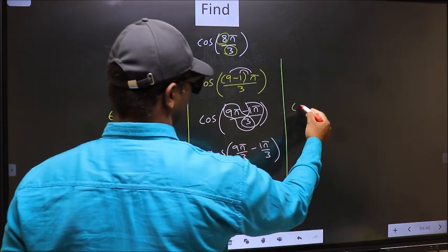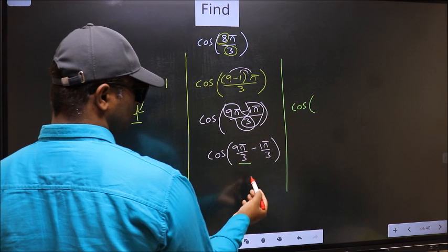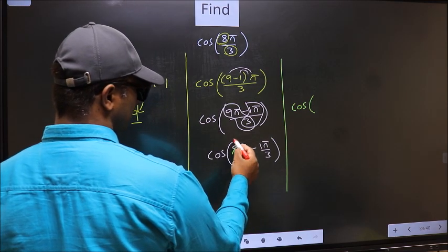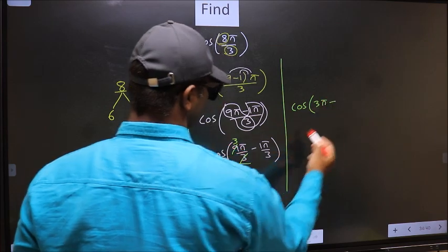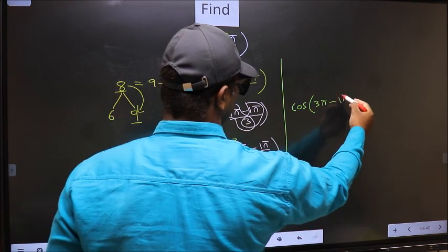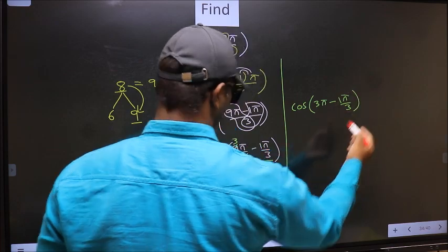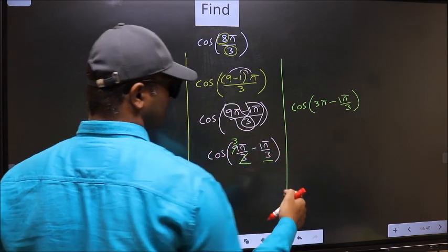Next, cos. Now here you should cancel: 3 ones, 3 threes. So you get 3π minus, this no change, 1π/3.